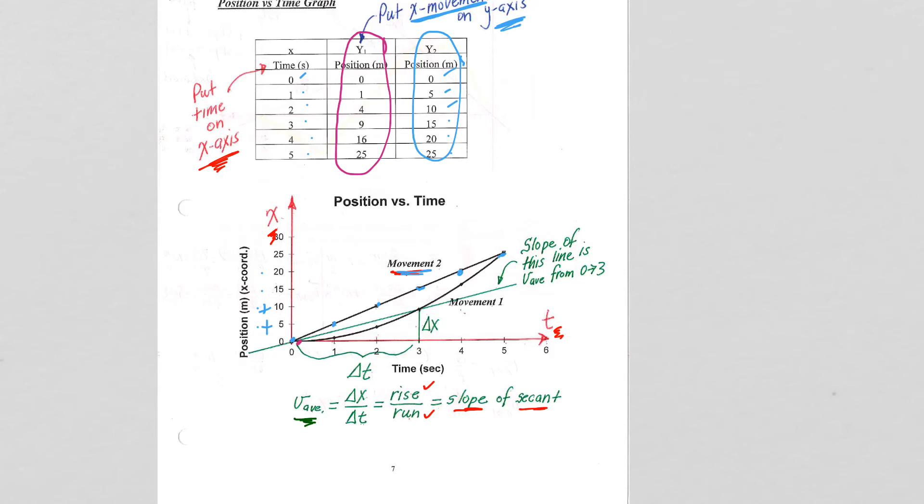At time t equals zero, we're at position zero. At time one second, we're at position positive one, and then at position positive four after two seconds, positive nine, positive 16, positive 25.